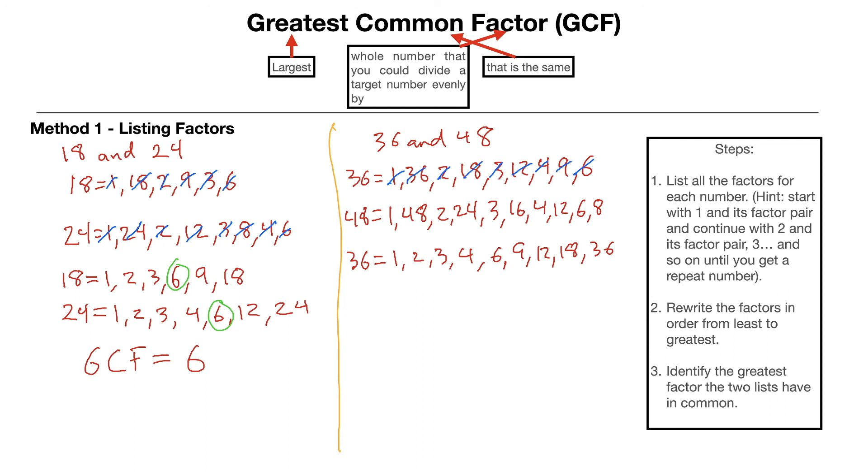Then for the number 48, we're going to list them in order from least to greatest. We've got 1, 2, 3, 4, 6, and 8. I've got all those written down. Continuing on, we have 12, 16, 24, and 48. And I'm going to cross those out. 12, 16, 24, 48.